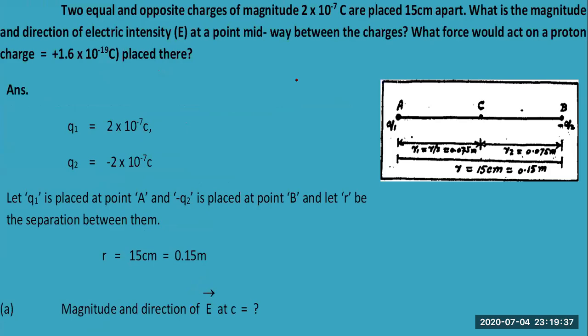Here's another problem where two equal and opposite charges of magnitude 2.2 × 10^-7 coulombs are placed 15 cm apart, that is 0.15 meters.